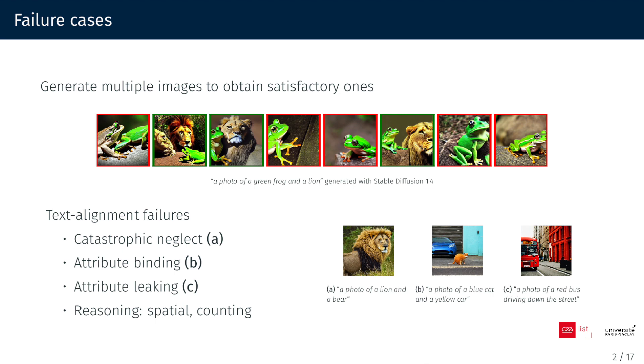These issues are known as text alignment failures, such as catastrophic neglect, where one or more objects are missing or sometimes mixed with other elements, as in image A. Attribute binding, where some attributes are not correctly bound by the models, as in image B.